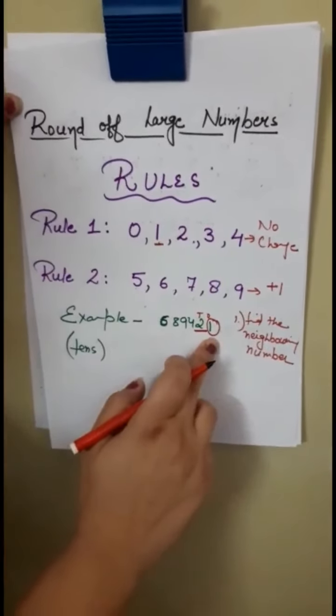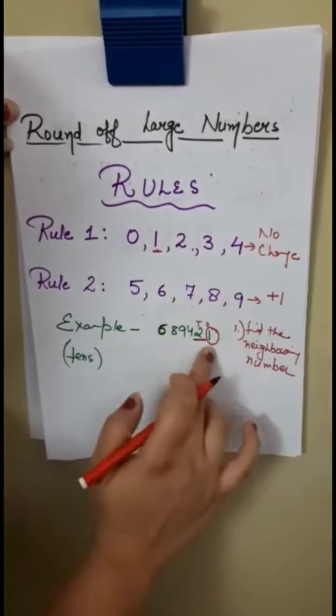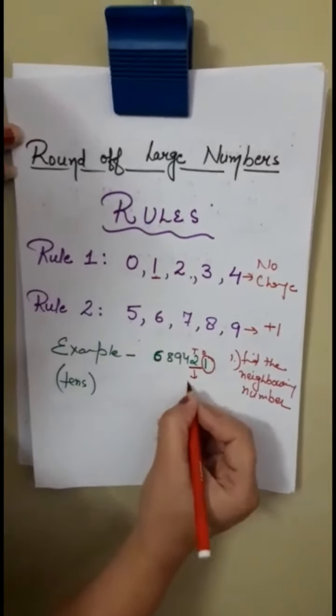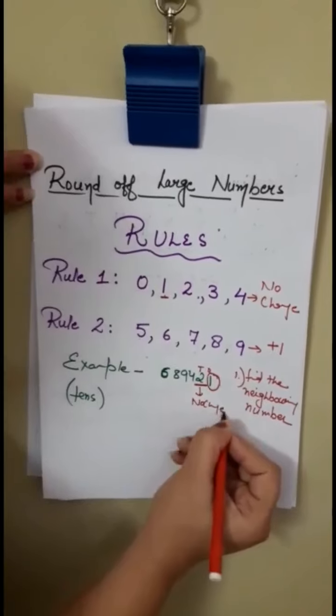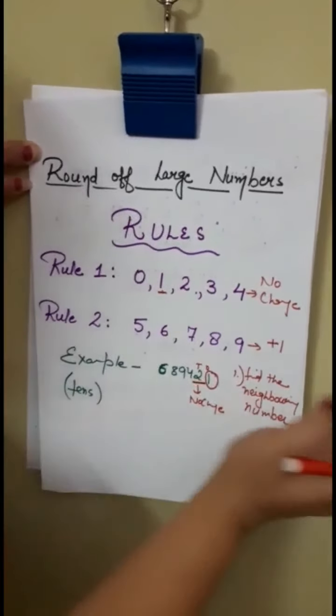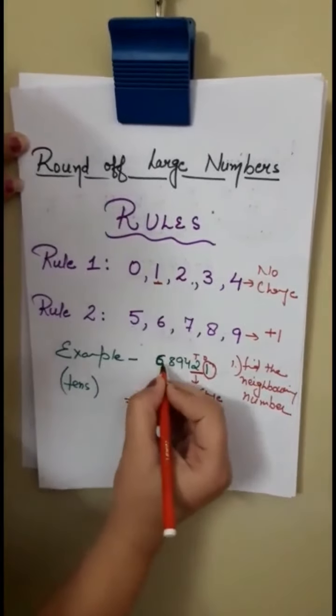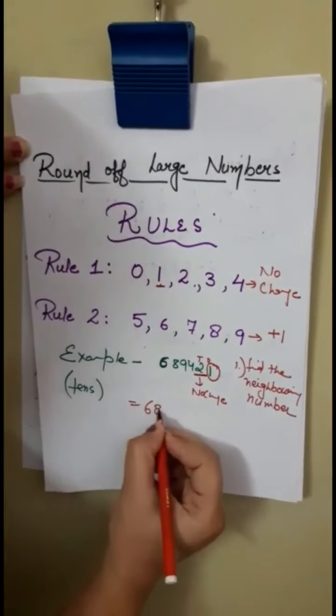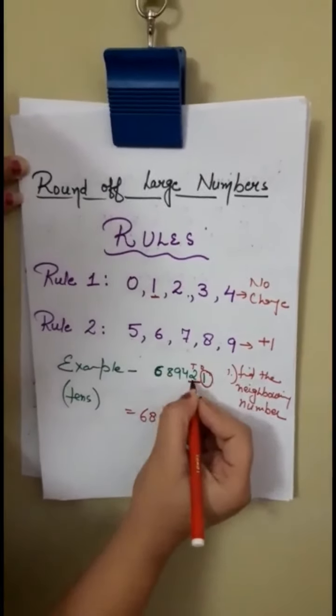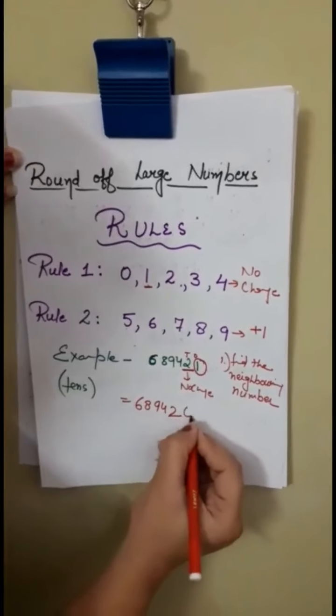Now our 1's place, your neighboring number hai that is 1. That means no change. To yahan per, that means 2 ke paas hoga no change. Or jis number ko aapne round off karna hai, uske aapke right side wale jitne bhi numbers hain, aagye wale sab 0 ho jate hai. Like ab mera answer kya hoga? Idhar wale numbers same: 6, 8, 9, 4. 2 ka 2 hi dega, no change. Aur 2 ke aagye wale numbers saare kya ho jayenge? 0.